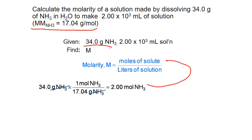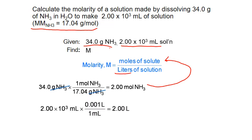That 2.00 moles becomes the numerator in the formula. We also need to convert the volume of solution into liters for the denominator. Using the conversion 1 mL = 0.001 L, we take 2000 milliliters times 0.001 liters per milliliter — the milliliter units cancel out — giving us 2.00 liters of solution, which becomes the denominator.